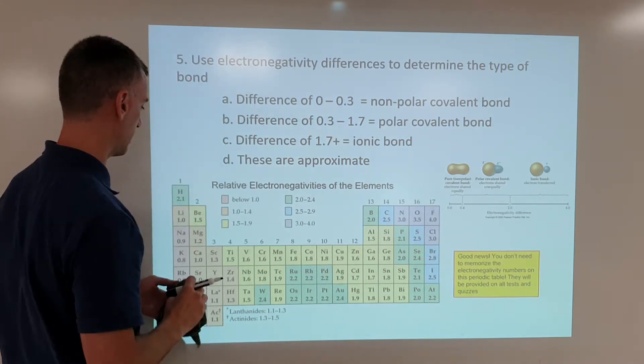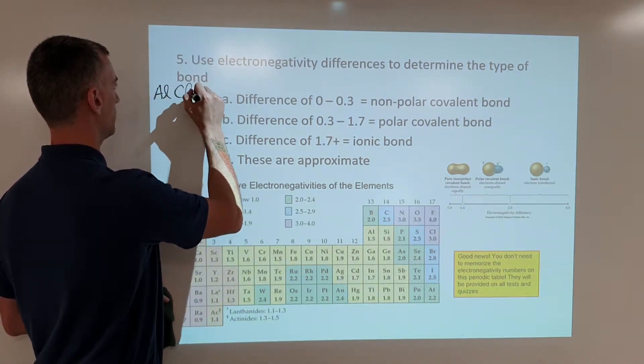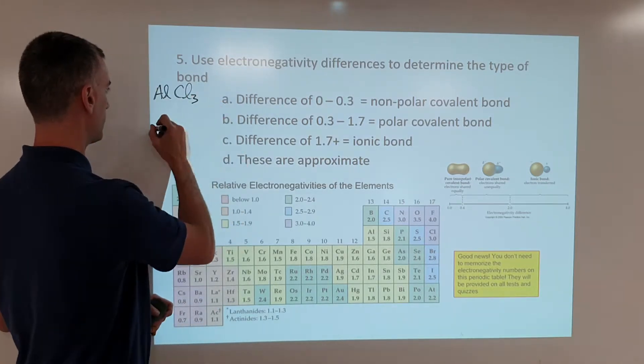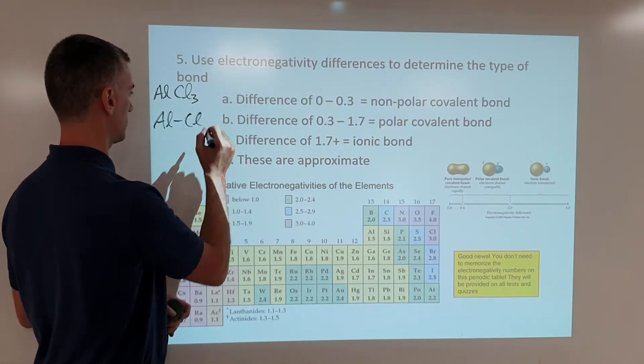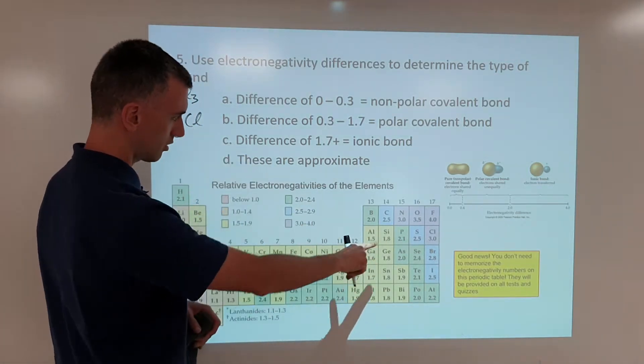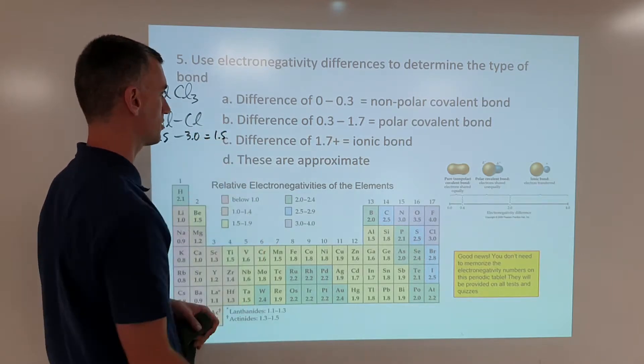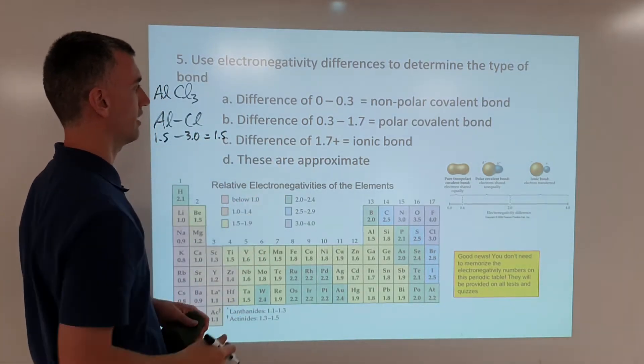And just to point out, you may see like a chemical formula such as maybe aluminum chloride, AlCl3. This just means aluminum chlorine bond. So that means aluminum 1.5, chlorine 3.0, difference of 1.5,